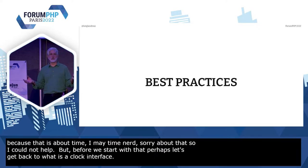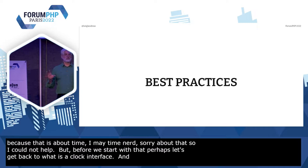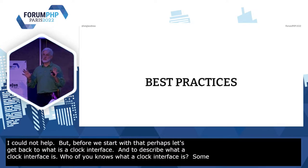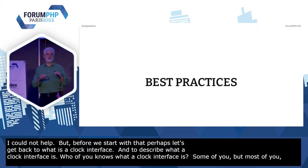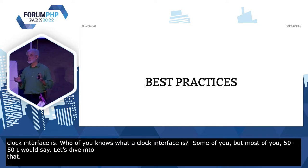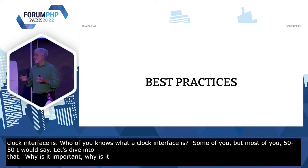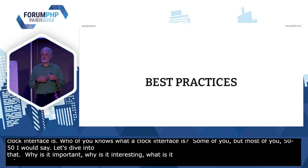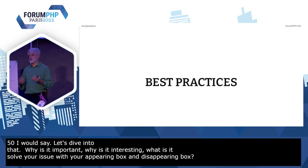Who of you knows what a clock interface is? Some of you, but kind of 50-50, I would say. Let's dive into that. Why is that important? Why is that interesting? Why does that solve your issues with your suddenly appearing bugs and suddenly disappearing bugs? We have to dive into best practices, object-oriented programming, test-driven development, stuff like that. Solid principles.